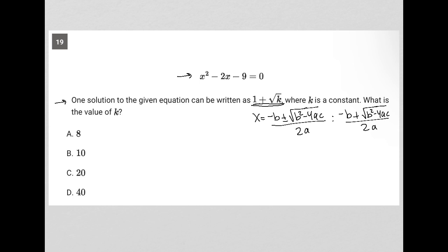So what do I have in terms of a, b, and c? There's no coefficient in front of the x squared, so that means a is equal to 1, b is negative 2, and c is negative 9.